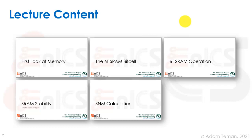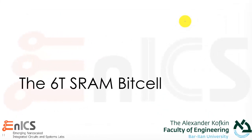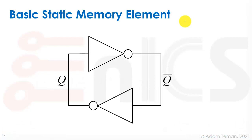Following our initial look at memory, let's dive into the 6T SRAM bit cell, which makes up pretty much all of the memory that's on chip today. This is a basic static memory element, and it might be surprising, but we actually saw this last lecture when we discussed flip-flops.